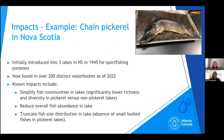Here is an example to show the impacts: chain pickerel in Nova Scotia. They were initially introduced into three lakes for sport fishing purposes in 1945, but have since expanded drastically. They can now be found in over 200 distinct water bodies in Nova Scotia as of 2022, through both natural connectivity between water bodies and illegal subsequent introductions for fishing purposes. Known primary impacts include simplified fish communities with significantly lower species richness and diversity, reduced overall fish abundance, and truncated fish size distribution — noted through an absence of small-bodied fish populations in lakes containing chain pickerel.